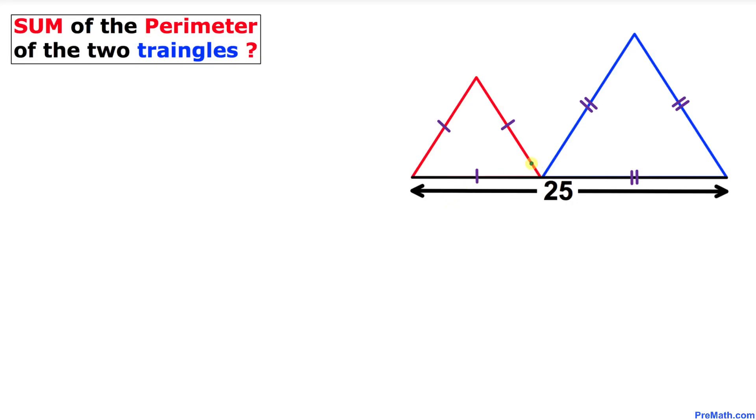Welcome to pre-math. In this video tutorial we have two triangles such that the sum of their base lengths is 25 units. Moreover, these are equilateral triangles and now we are going to find the sum of the perimeters of these two triangles.